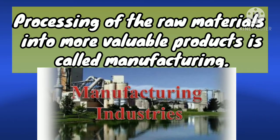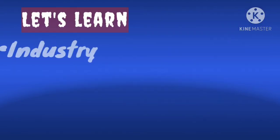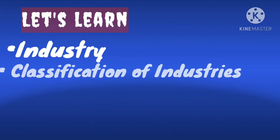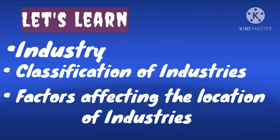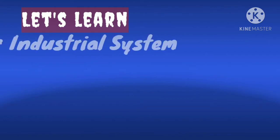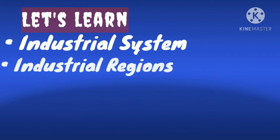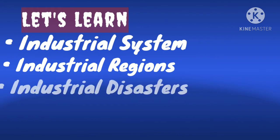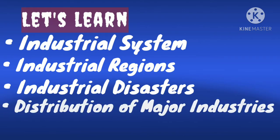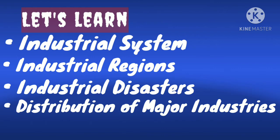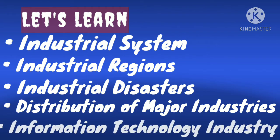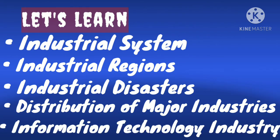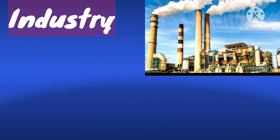In this chapter we will be covering the topics: industries, classification of industries, factors affecting the location of industries, industrial system, industrial regions, industrial disasters, distribution of major industries, and information technology industry.